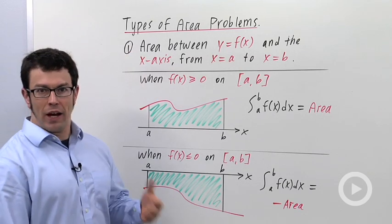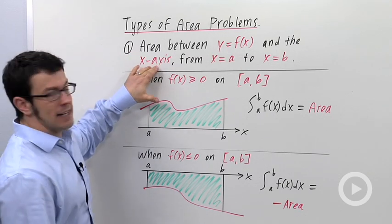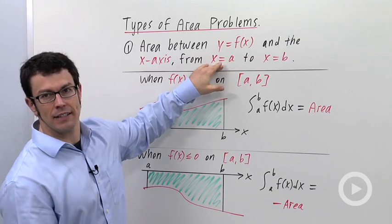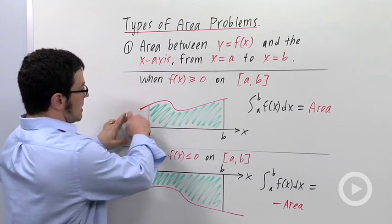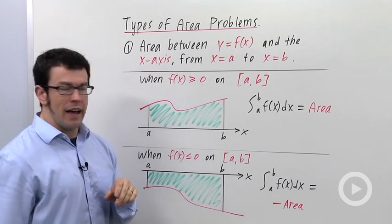First, the area between y equals f of x, some curve, and the x-axis from x equals a to x equals b. That situation looks like this. Say this is your graph of y equals f of x.